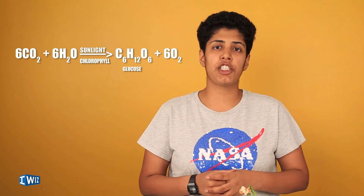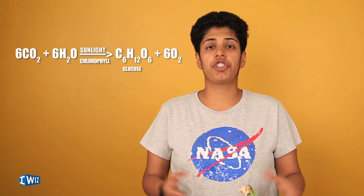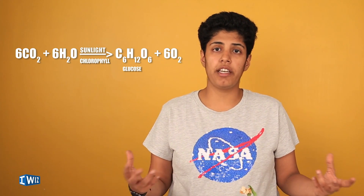Up next is photosynthesis. Photosynthesis is the process by which plants make their own food. The plants need carbon dioxide and water — these are the raw materials. Sunlight is the energy that is converted into chemical energy. So the equation is: carbon dioxide plus water gives us sugar, which is C6H12O6, and oxygen. Oxygen is a byproduct made in this process.